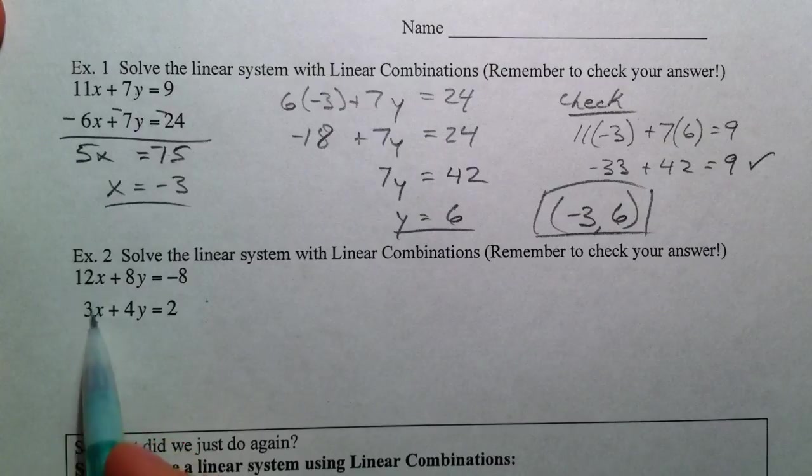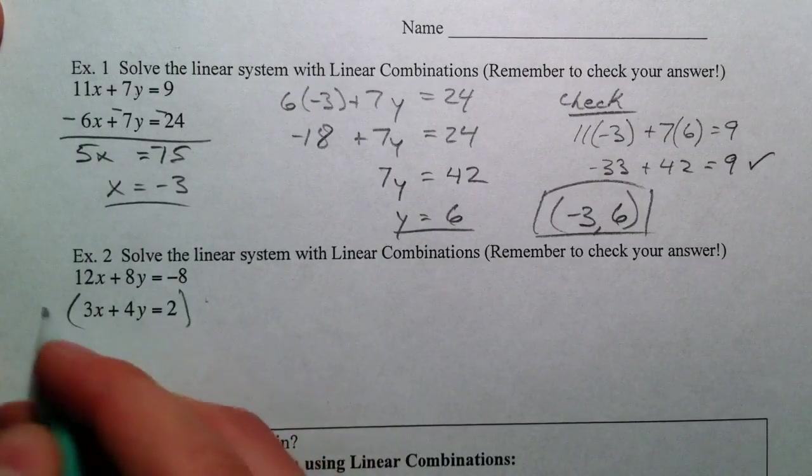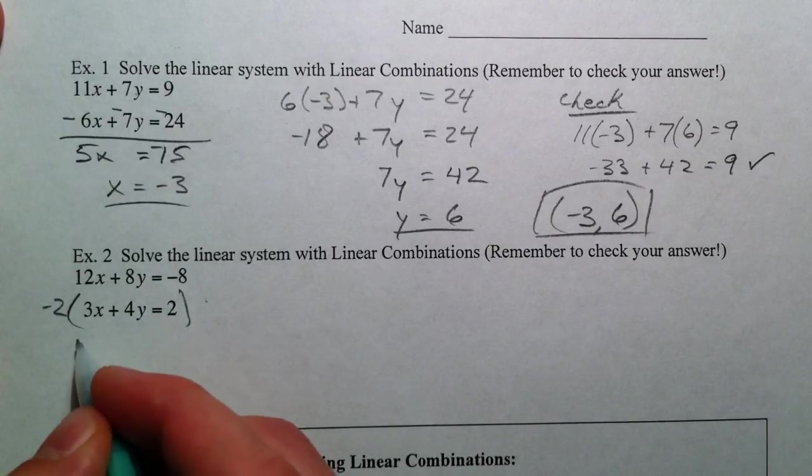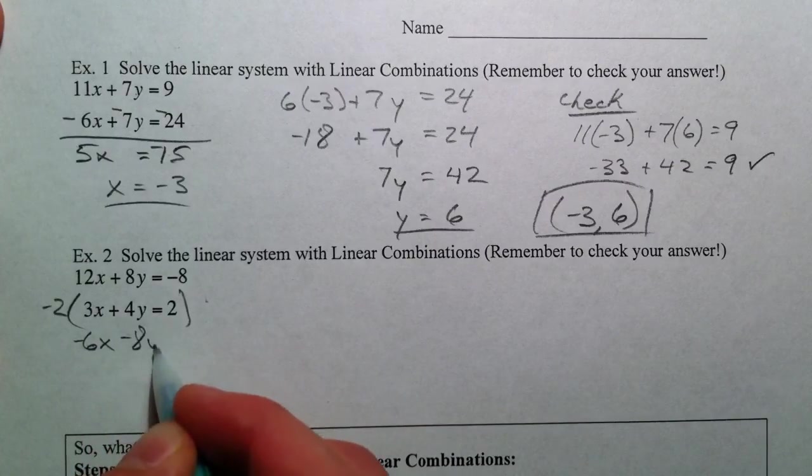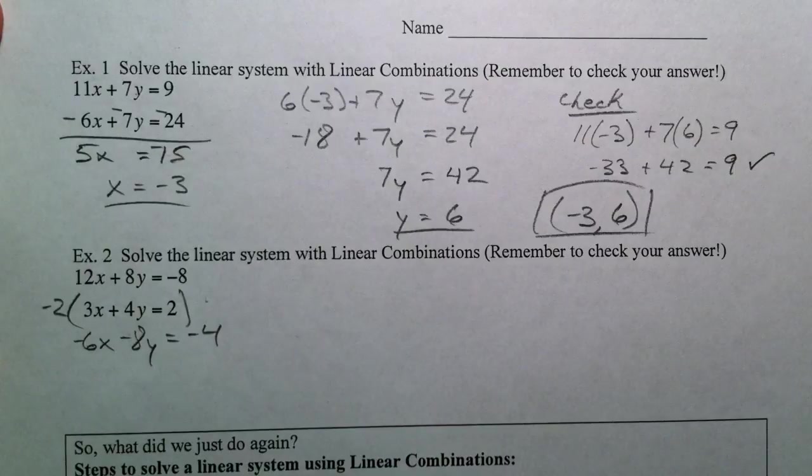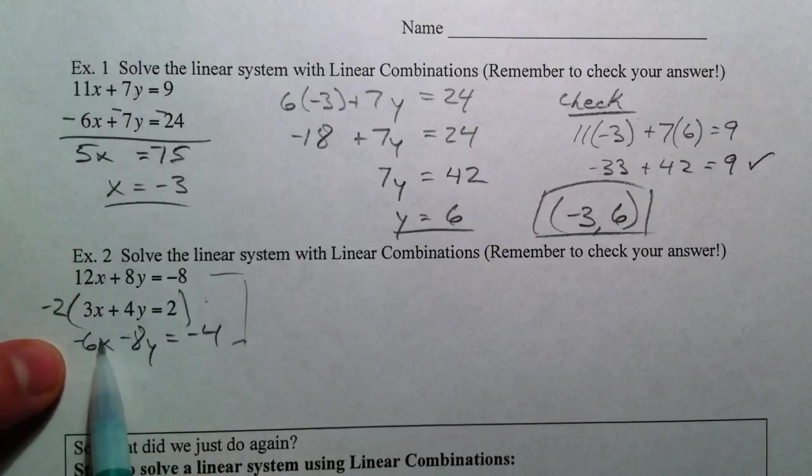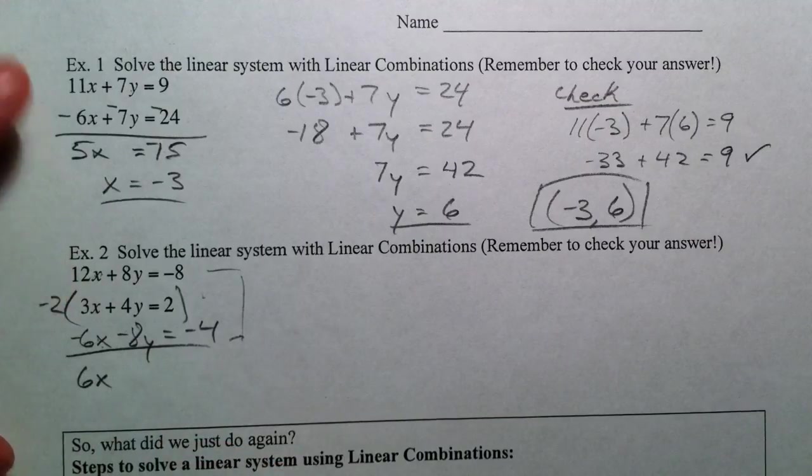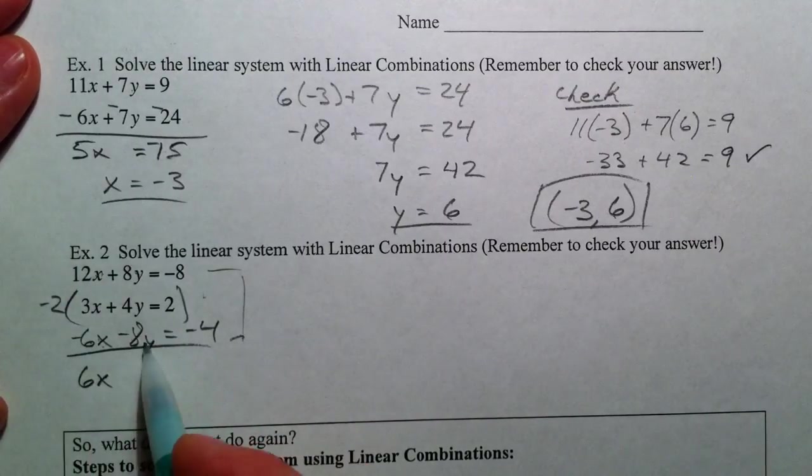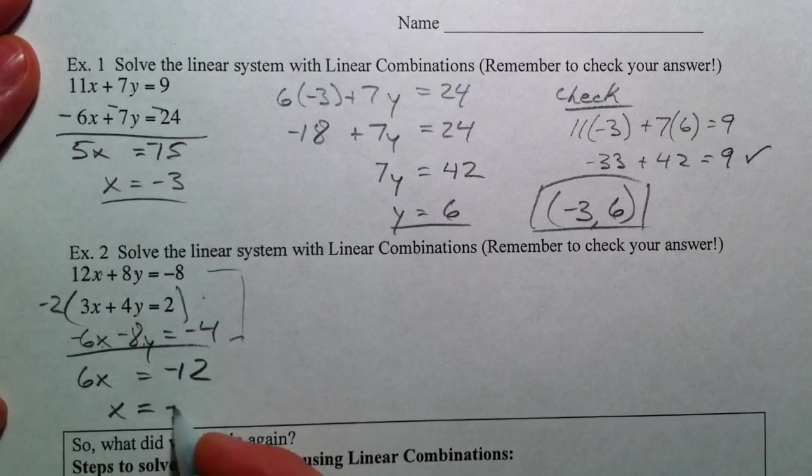So, in this case, 12 and 3. If you multiply the 3 by a 4, you can get 12. Or if you multiply this 4 by a 2, you can get 8. And so, that's what I'm going to choose just because I like multiplying by smaller numbers. Negative 2 gives negative 6x minus 8y minus 4. I'm going to combine this first one with the adapted second. 12 minus 6 is 6x. 8 minus 8 is 0. Negative 8 minus 4 is negative 12. So, x equals negative 2.